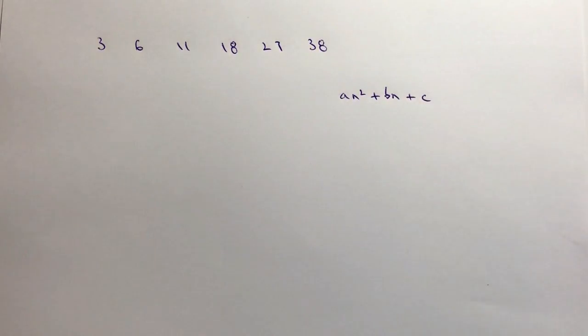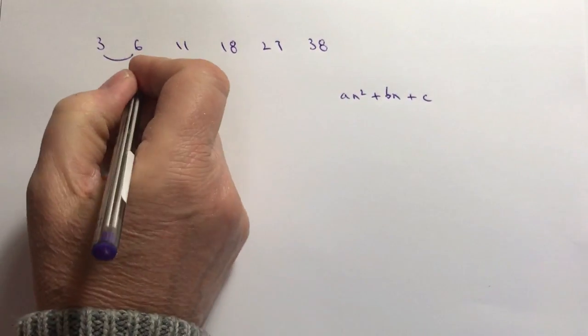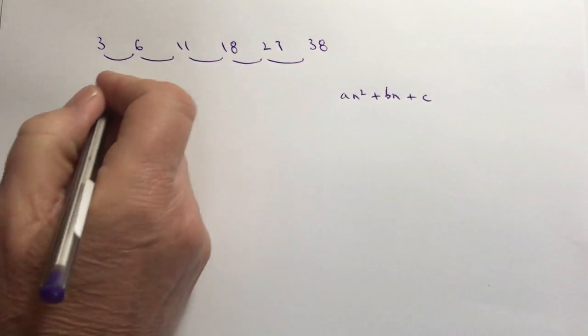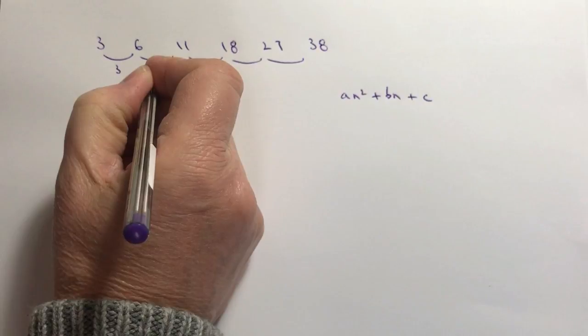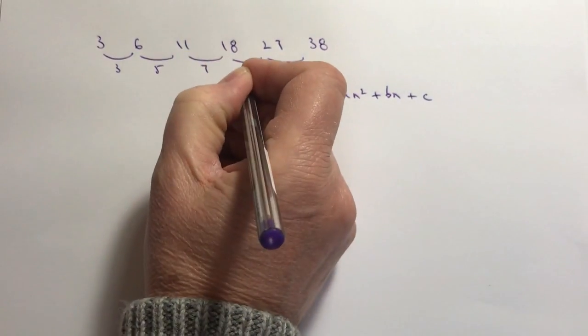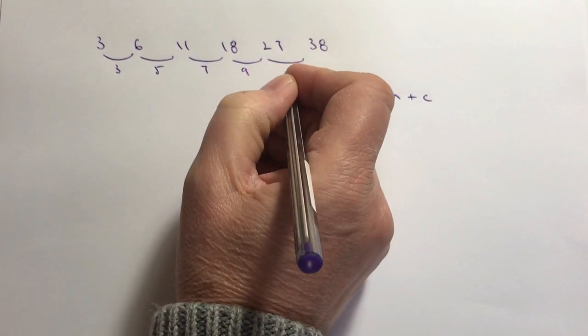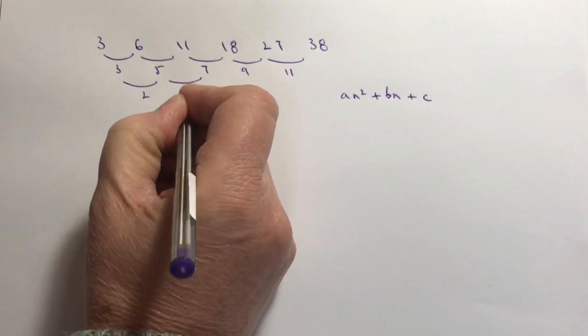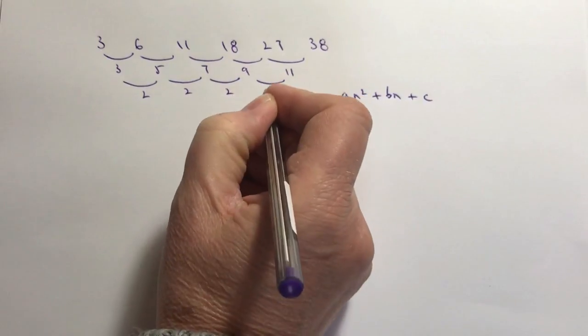The first thing that we do is we work out the difference between each of the terms and the first line difference is this: I've got 3, 5, 7, 9, and 11. Then the second difference as you can see from here is going to be 2.